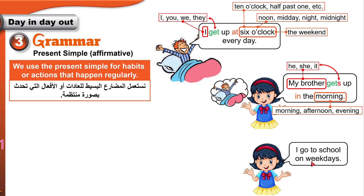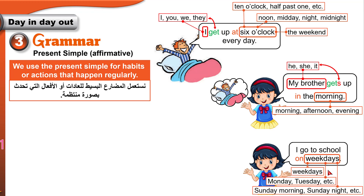IN is used with morning, afternoon, and evening: in the morning, in the afternoon, in the evening. ON is used with weekdays and specific days: I go to school on weekdays, on Monday, on Tuesday, on Sunday morning, on Sunday evening, on Sunday afternoon.